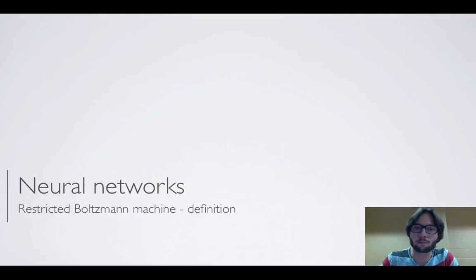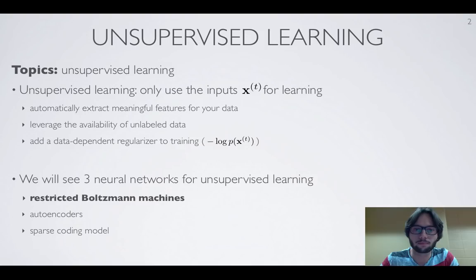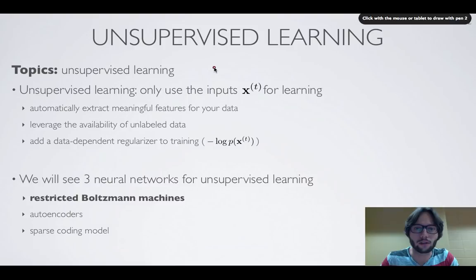In this video, we'll introduce a new type of neural network called the restricted Boltzmann machine and present its definition. This is our first example of a neural network for unsupervised learning. What we've seen before are neural networks that learn to predict from an input a particular target — a class label, or from an input sequence a sequence of class labels — with the feed-forward neural network and the conditional random field.